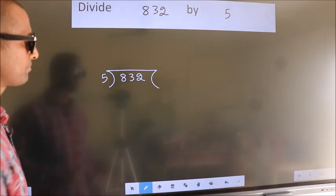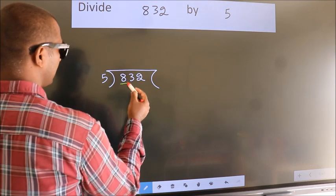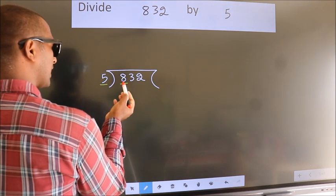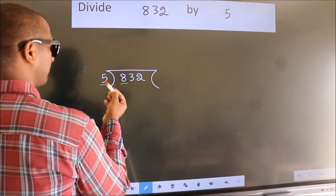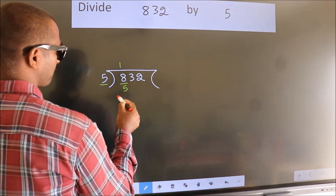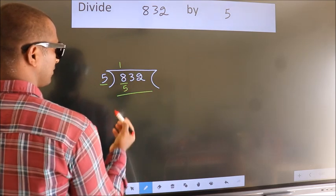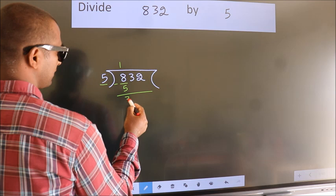Next, here we have 8, here 5. A number close to 8 in the 5 table is 5 times 1, which is 5. Now we should subtract. We get 3.